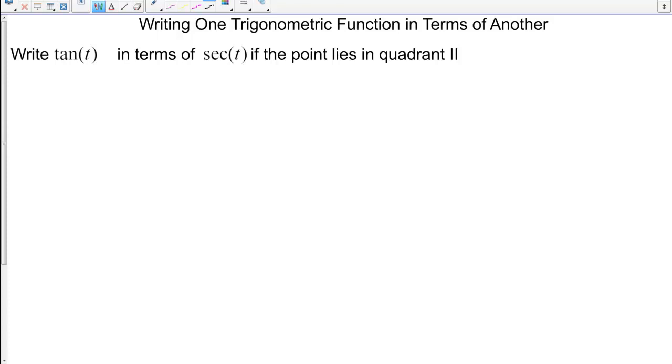Now we want to write tangent of T in terms of secant of T if the point lies in quadrant 2. What do we know about secant and tangent and how they're related?